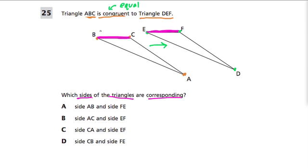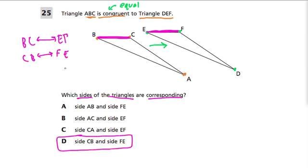So you would say that BC, or you could say CB, the order doesn't matter, corresponds to EF or you could say to FE. These things are corresponding to each other. And all that means, again, is they're in the same spot. If you look down here at D, they have that answer, CB and FE.